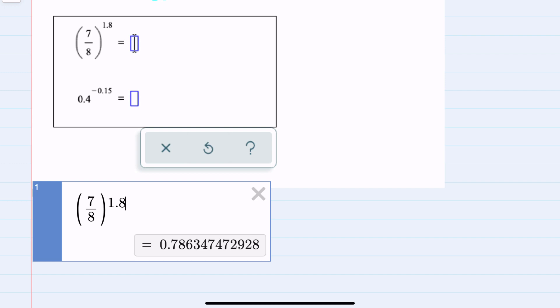And then to get the exponent I used the caret symbol. So in Desmos I opened a parentheses, entered 7 divided by 8, closed the parentheses, used the caret symbol to get an exponent, and then 1.8.